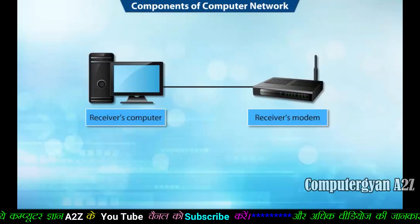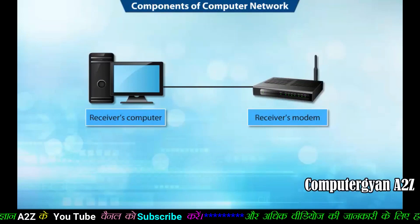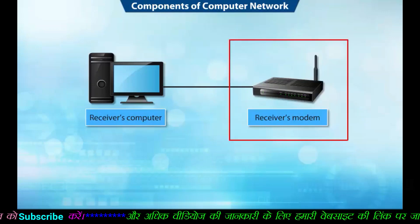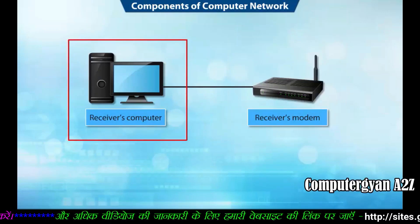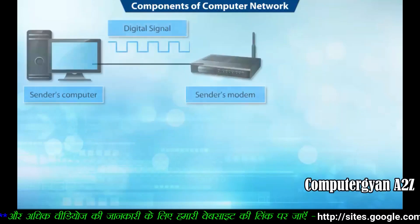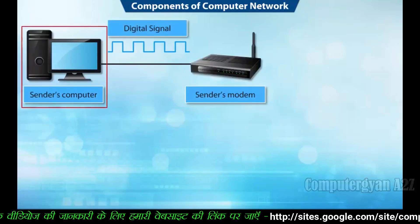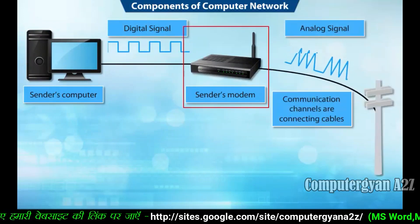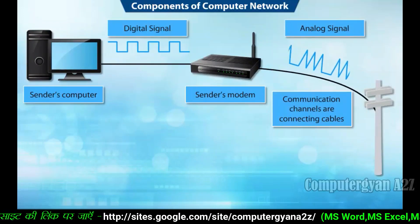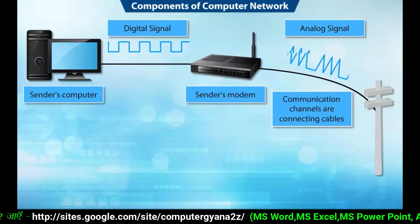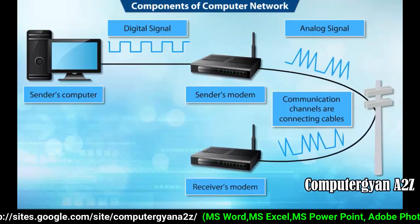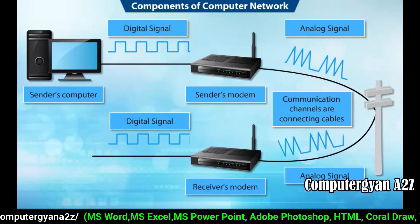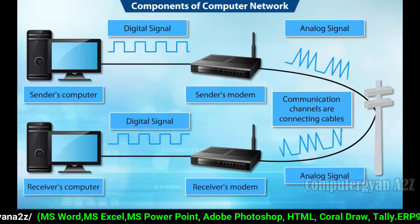The components of a computer network connected via telephone cables at the receiver's end are the receiver's modem and receiver's computer. Digital signals from a sender's computer get converted into analog signals by the sender's modem. These analog signals are carried by telephone cables to a receiver's modem, which converts the analog signals back to digital signals and then passes them to the receiver's computer.